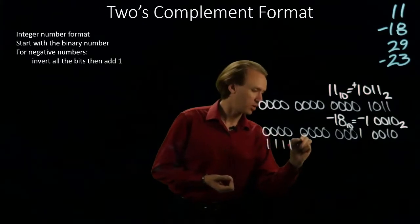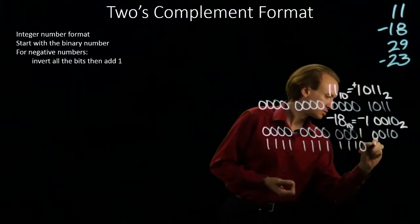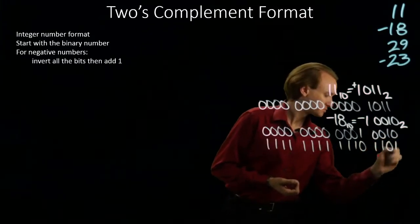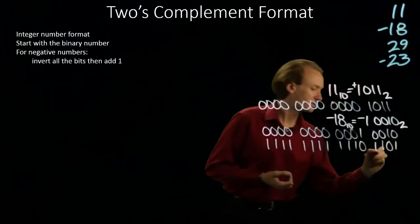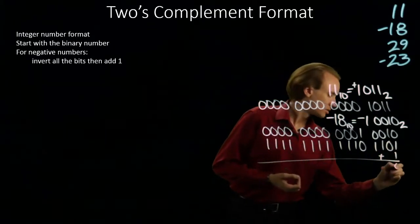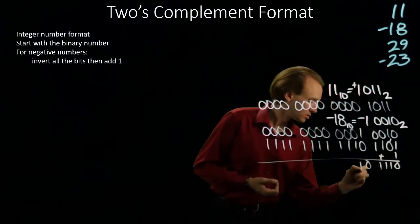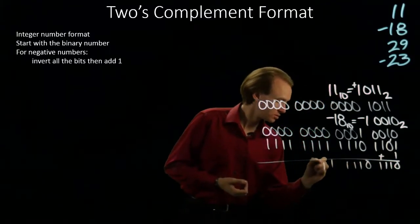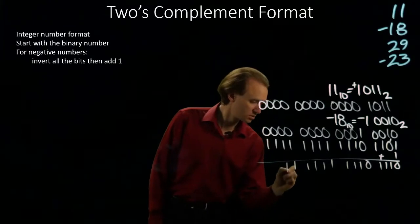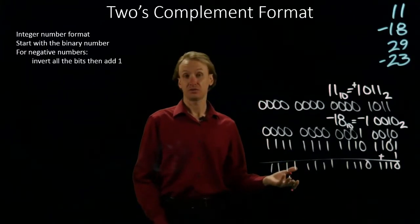So I will flip all of these bits, and now I'm going to add 1 to this. So there is negative 18 in two's complement.